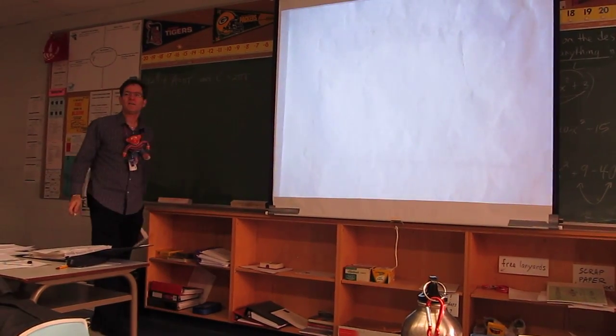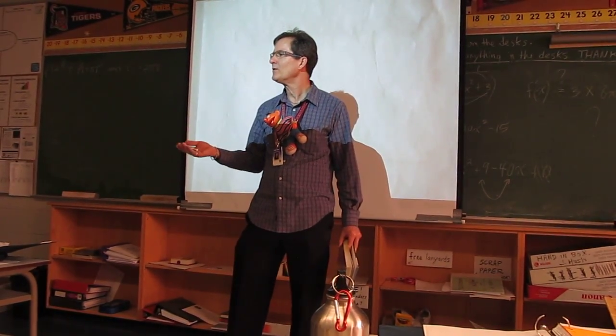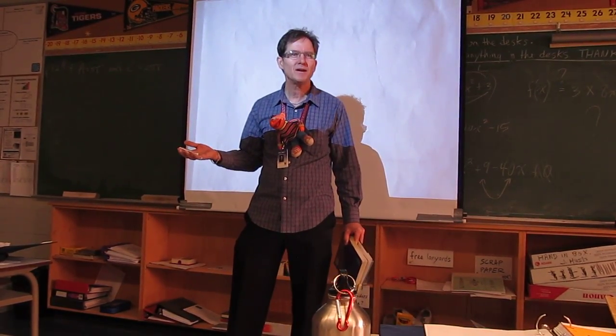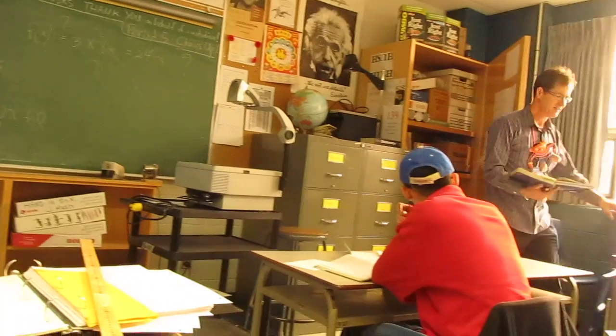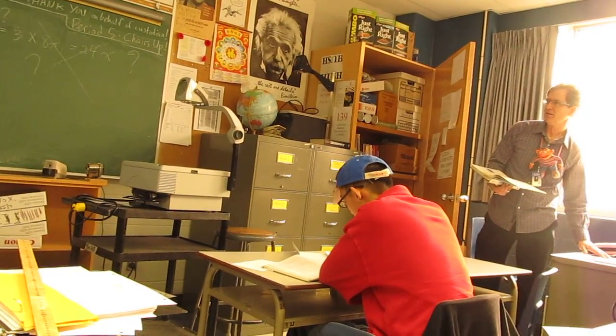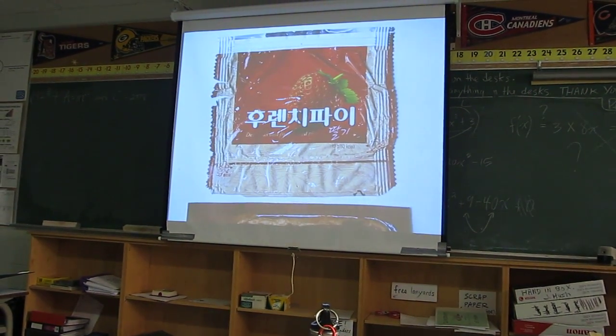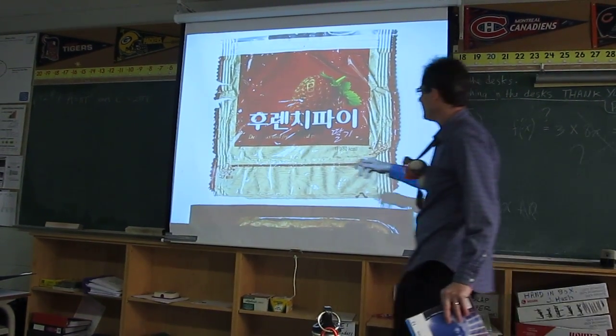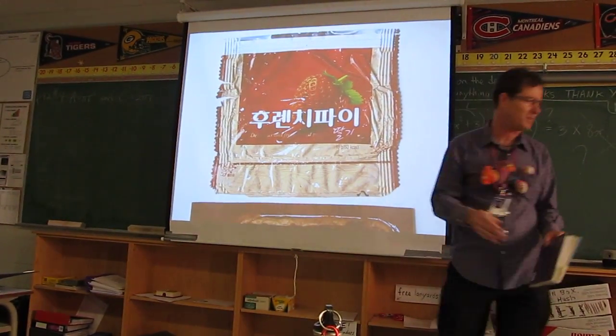I don't know why they say pi r squared because pi are round, so why do they say pi r squared? Let me show you a couple examples where pi r squared. First of all, here's a Korean one. See it's square. It says delicious and fresh baked pie. You Korean guys know that. This is square pie.